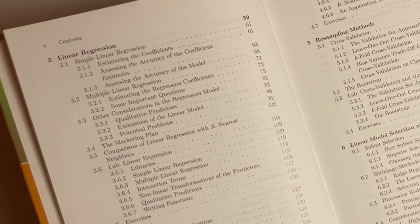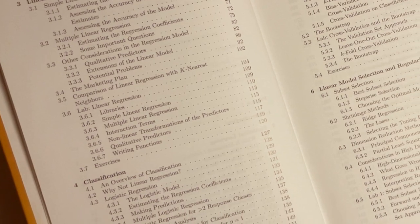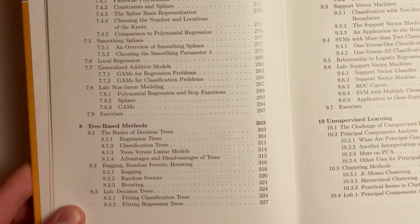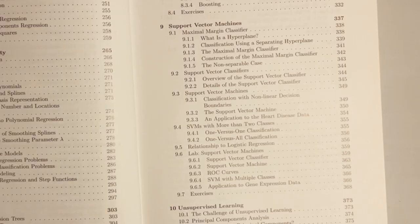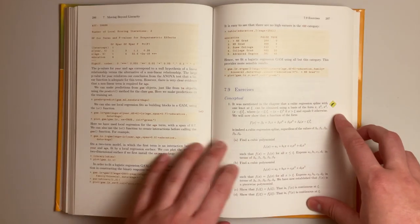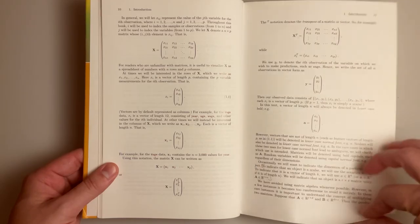It assumes the reader knows little to nothing about machine learning. The breadth of topics covered is wide. It covers linear models, classification, bagging, boosting, support vector machines, cross-validation, and many more. Each chapter ends with analytical exercises and labs which require the reader to solve problems with R.